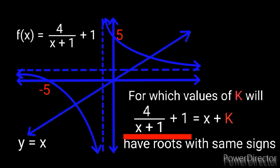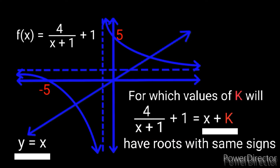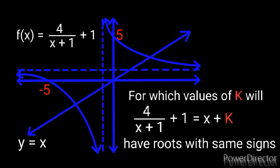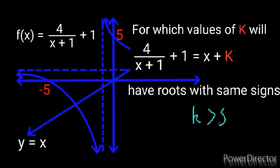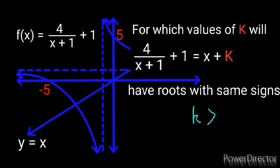Looking at the equation, k simply represents the vertical shift of the straight line graph. We have agreed the shift must be greater than 5 units upward. So we take k and say k is greater than 5. If it had been negative k, we would write negative k > 5 and then divide both sides by negative, changing the inequality sign to get k < -5. But here k is positive, so our answer is simply k > 5.